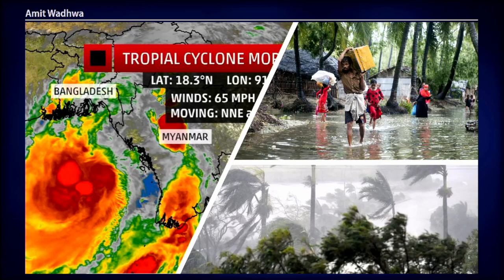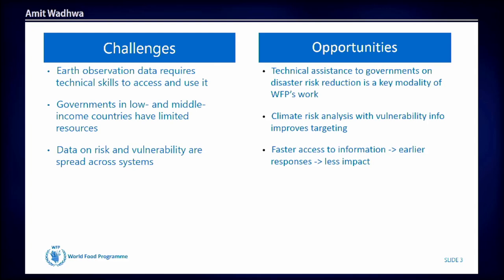We face multiple challenges. One is that Earth Observation data requires technical skills to access and use. For example, the data from GDAX requires an API, and the way to request it is different from earthquake information or rainfall information — rasters from satellites require a different access method. The second challenge is that governments in low and middle income countries have limited resources. Not all countries have enough budget for a GIS unit inside the agency or inside country offices, or the infrastructure like a server to access all the information automatically.